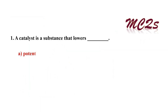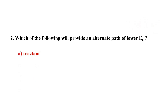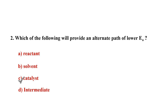Some MCQs: A catalyst is a substance that lowers activation energy. Which of the following provides an alternate path with lower activation energy? Definitely, catalyst. This covers the topics discussed in this video — effect of catalyst and effect of temperature. Arrhenius equation and collision theory are deleted from the syllabus, as the syllabus has been reduced. With this, chemical kinetics is completed.